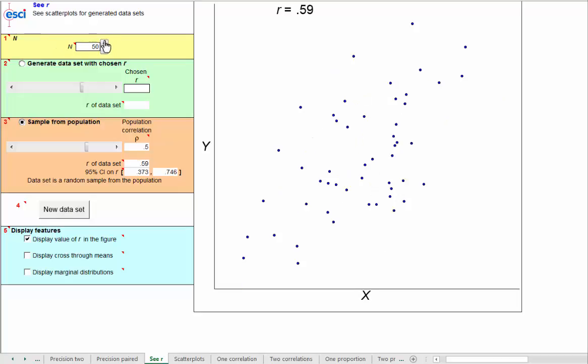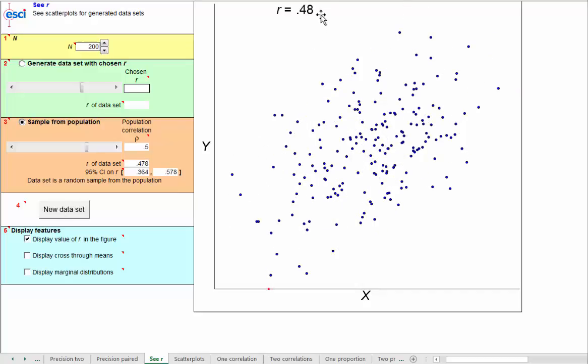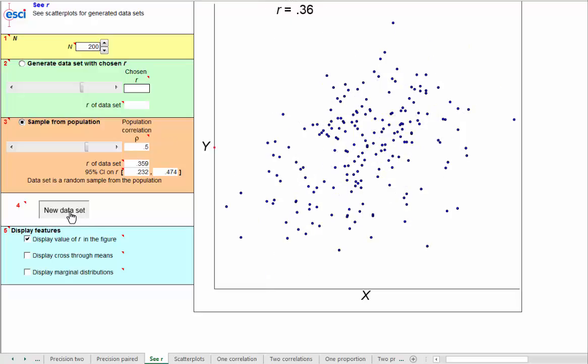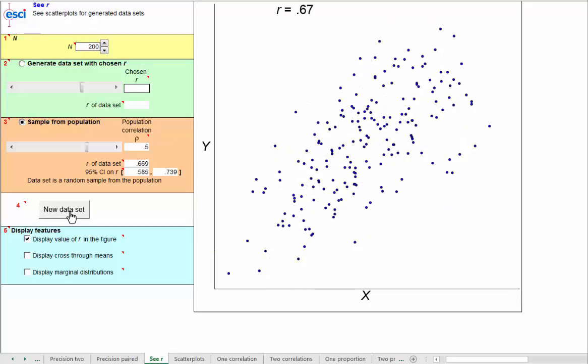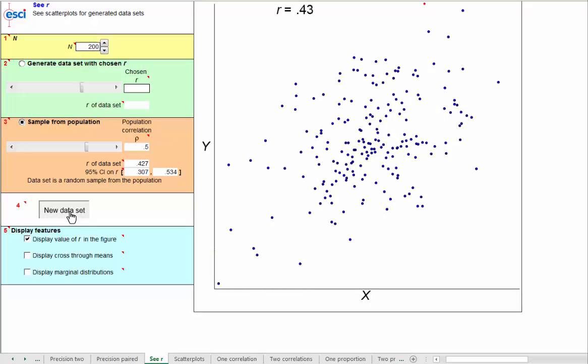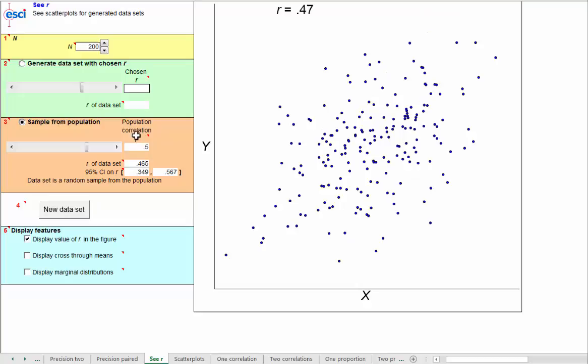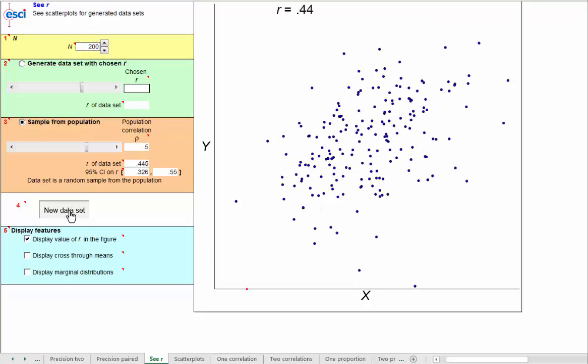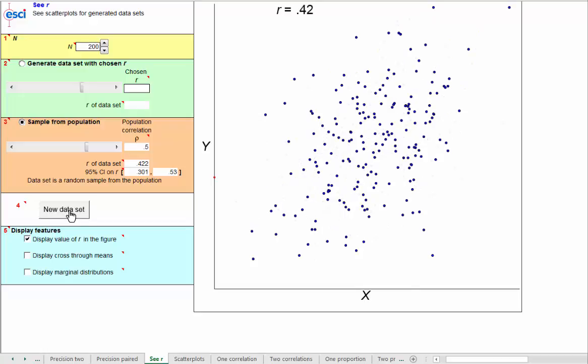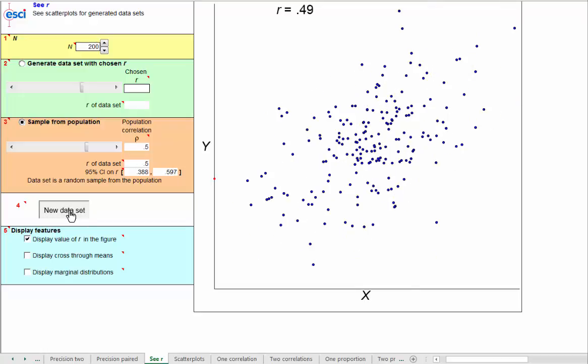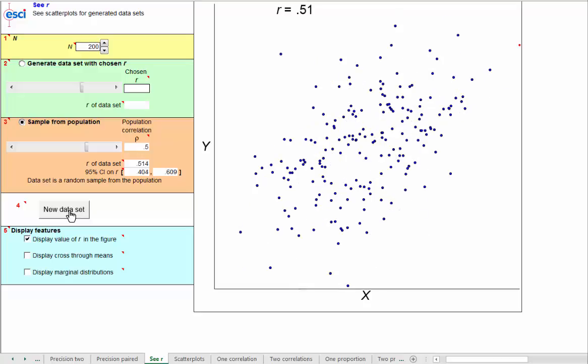Now suppose I chose a value of n that was much larger, say 200. Would we expect the r values to bounce around more or less on successive samples? We're still sampling from an underlying bivariate normal distribution with correlation 0.5. Well, they still bounce around, but would you agree? Not so widely, not so frenetically as before.